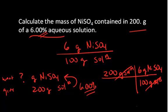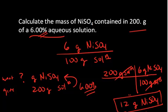And do the math: 200 times 6 divided by 100 equals 12 grams of nickel sulfate. So with this very simple mass percent concentration, we can determine in a given amount of solution the amount of solute present.